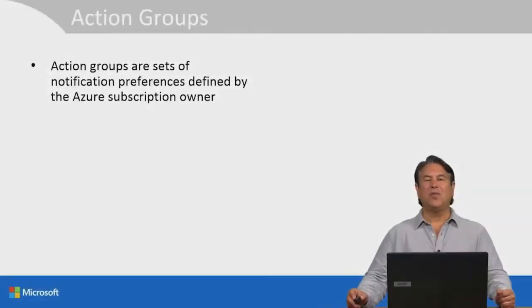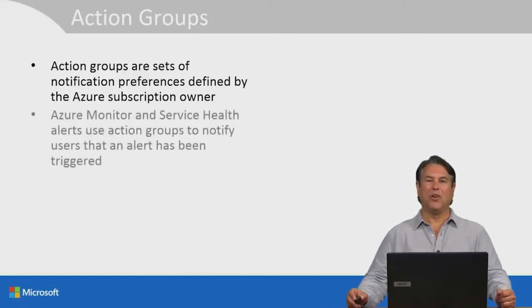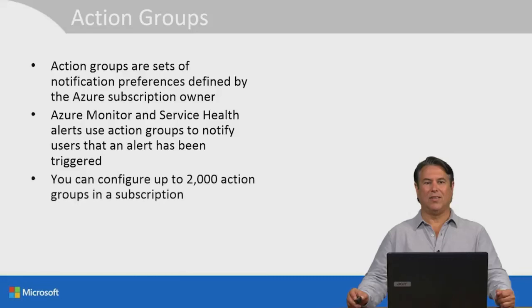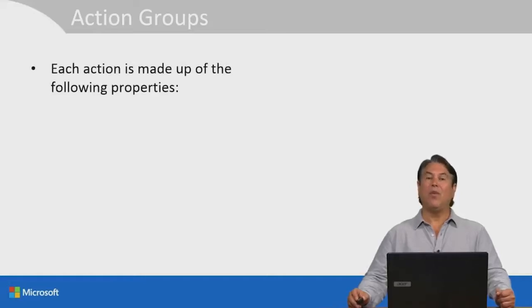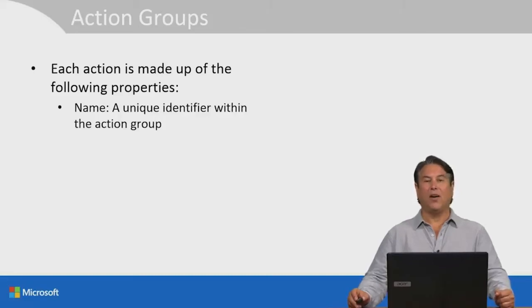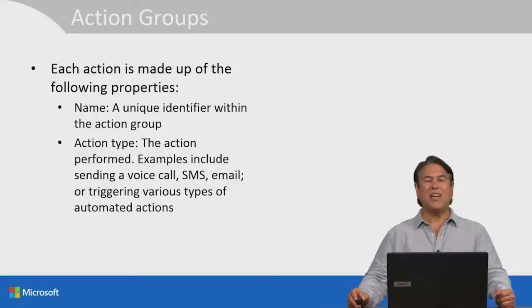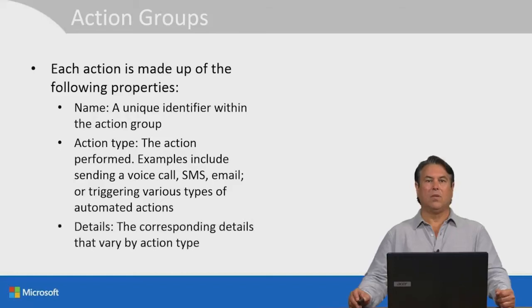Action groups are sets of notification preferences defined by the Azure subscription owner. Azure Monitor and service health alerts use action groups to notify users that an alert has been triggered. You can configure up to 2,000 action groups in a subscription. You configure an action to notify a person by email or SMS, and they receive a confirmation that they've been added to the action group. Each action is made up of a name (a unique identifier), the action type, the action performed (such as a voice call, SMS, email, or triggering automated actions), and the corresponding details.